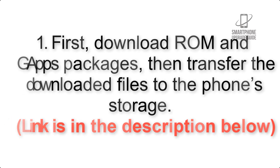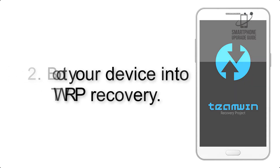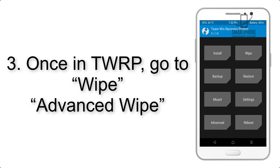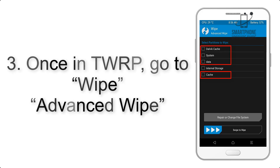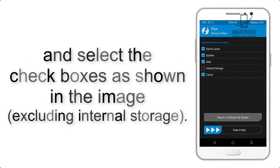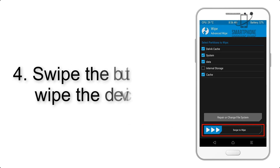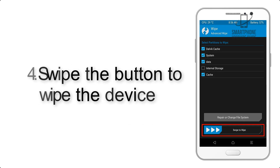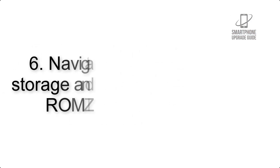Step 2: Boot your device into TWRP recovery. Once in TWRP, click on wipe, then Advanced Wipe, and select the checkboxes as shown in the image, excluding internal storage. Step 4: Swipe the button to wipe the device.